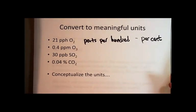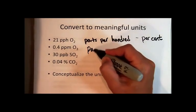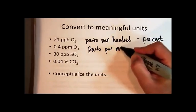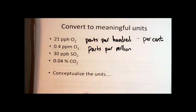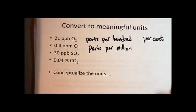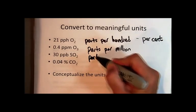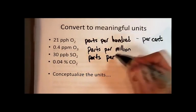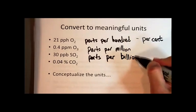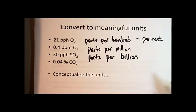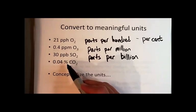What about PPM, 0.4 PPM ozone? PPM stands for parts per million. And so that means that in air, there are 0.4 parts per million ozone. What about PPB? That's parts per billion. And down here, of course, is percent, which would be the same as parts per hundred or percent carbon dioxide.